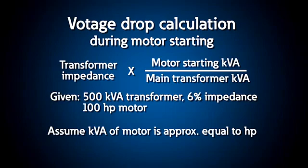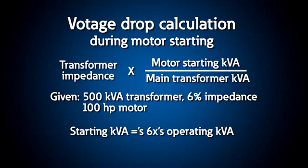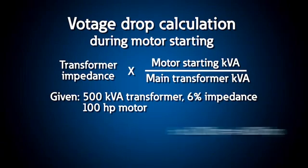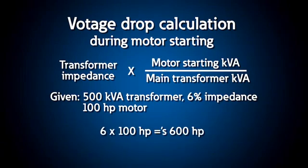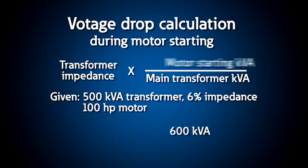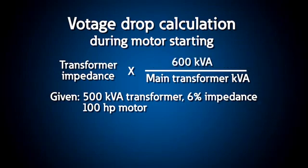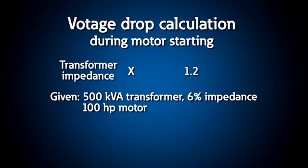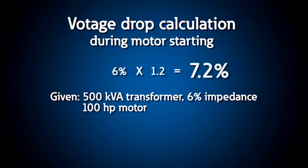Then, for a 100 horsepower motor, estimate the starting kVA at 6 times the operating kVA of 100, resulting in a starting kVA of 600. The ratio of motor starting kVA to transformer kVA is 1.2, so the voltage drop across the main transformer during starting will be 1.2 times the transformer impedance, or 7.2%.